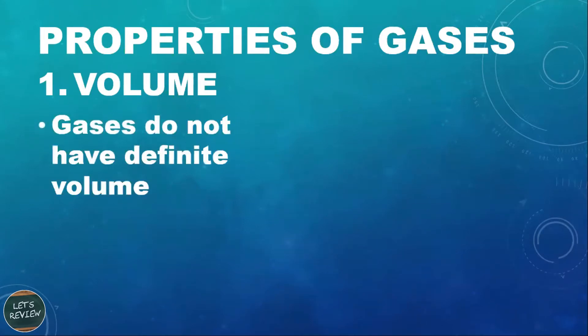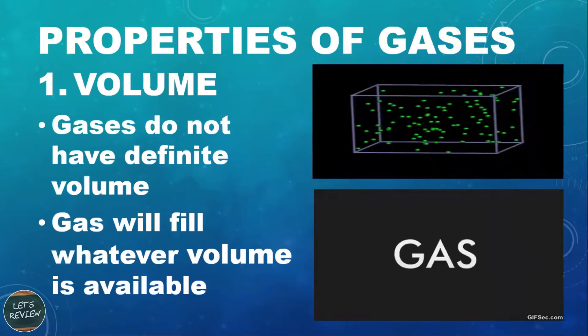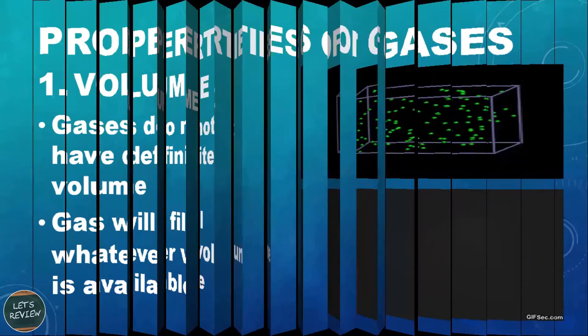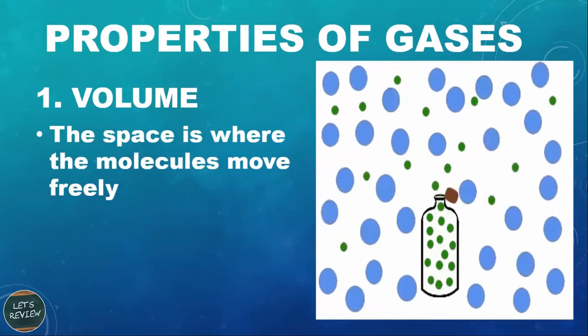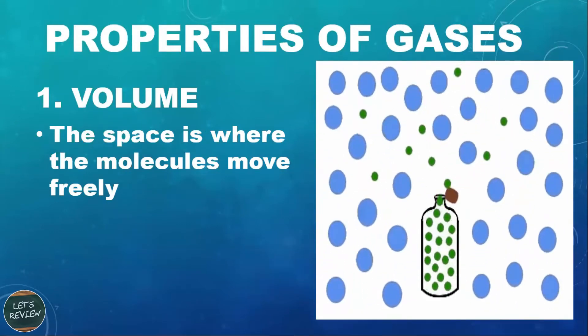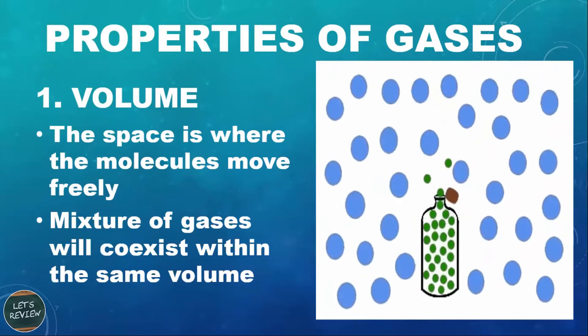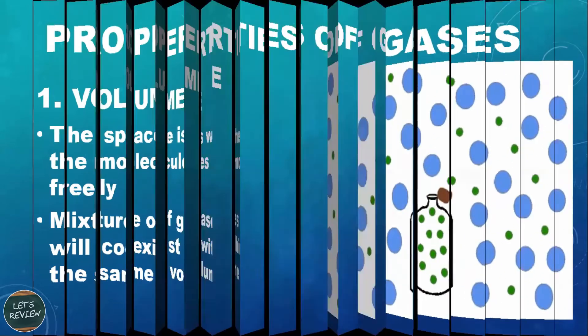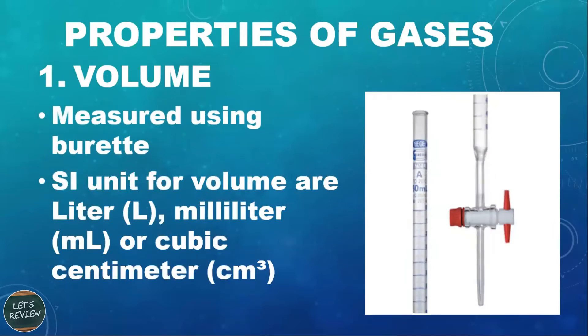Volume. Gases do not have definite volume. You have to remember that gas will only fill whatever volume is available, like inside a box or cylinder. The space is where the molecules move freely, as you can see in the animation. Since they are moving freely, that is how they are considered to be gas. The mixture of gases will coexist within the same volume. It is measured using burette. Have you seen something like this? The SI unit for volume is liter, milliliter, or cubic centimeter.